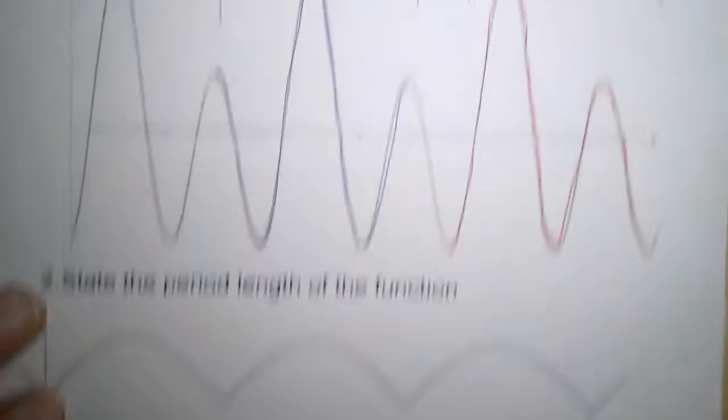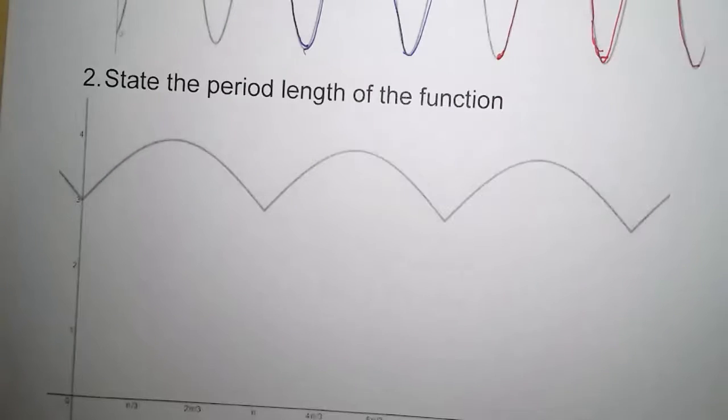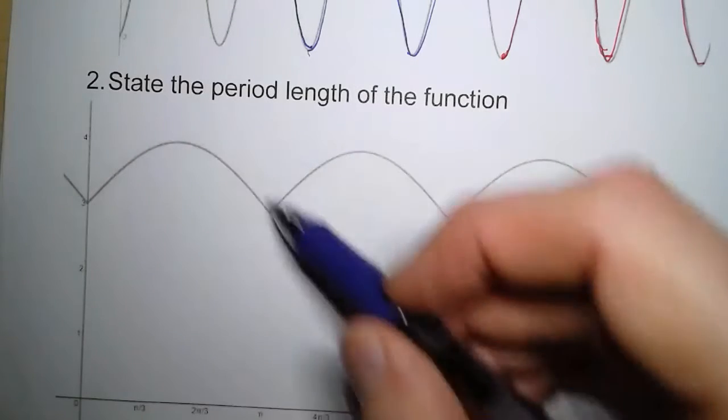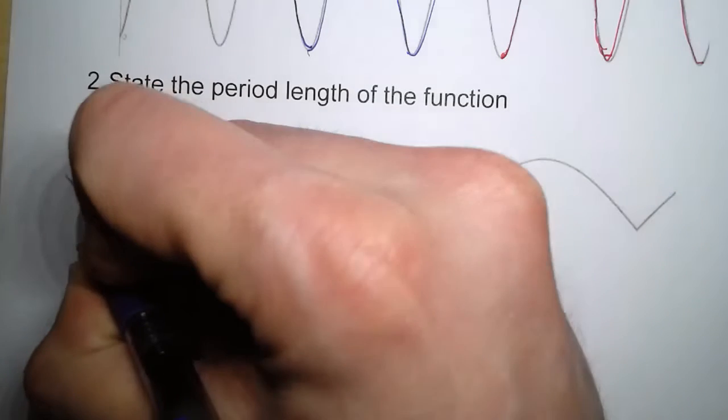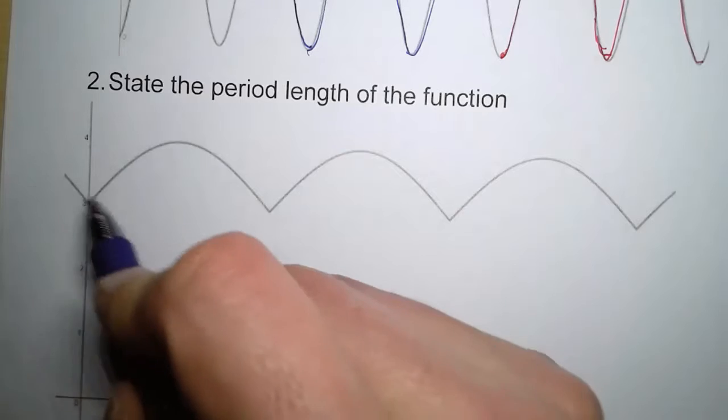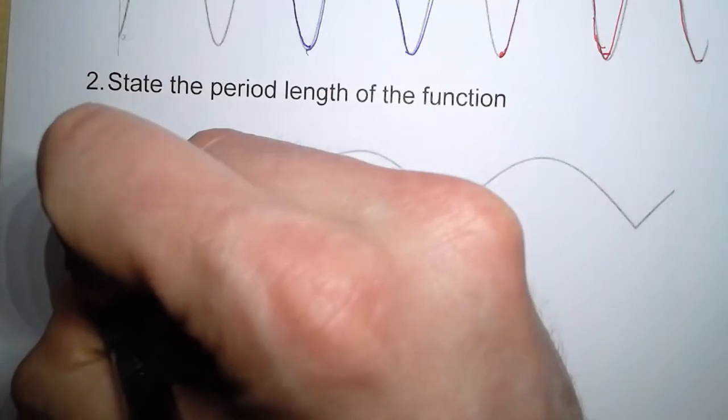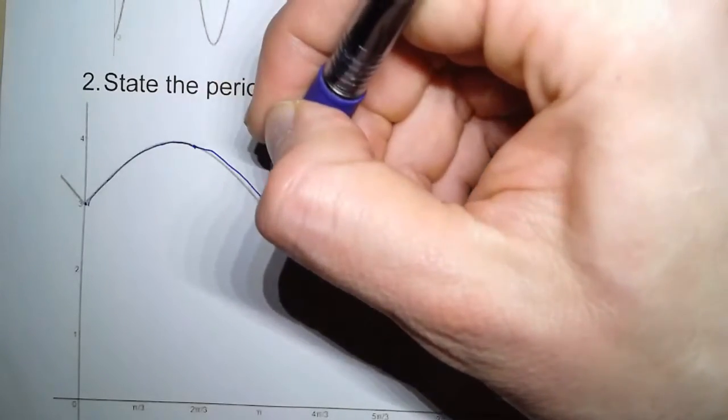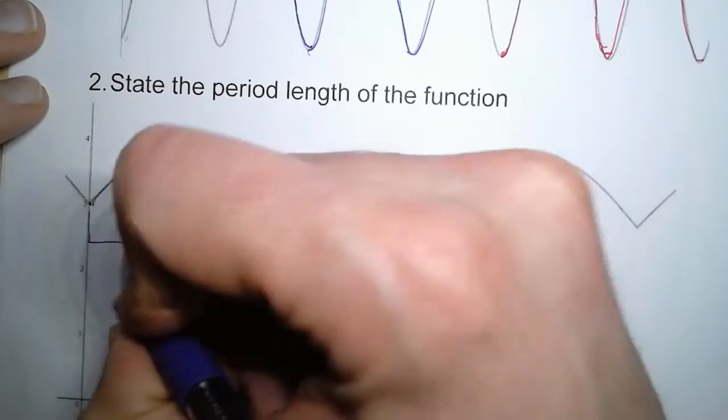Now in the second one, totally different shape, but it's still the same idea. We go from hump to hump to hump. And so how far do we have to go? Well, if I start here, I can trace all the way up to here and go from here all the way to there. And so this right here is our period length.